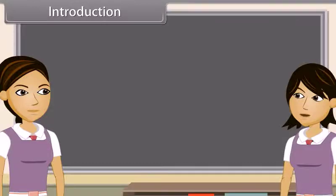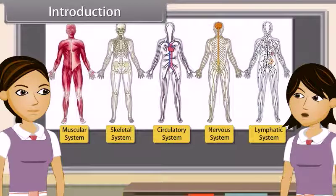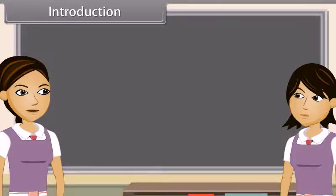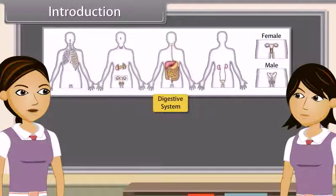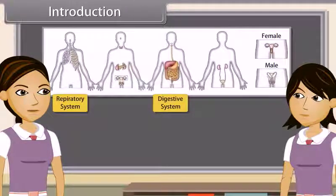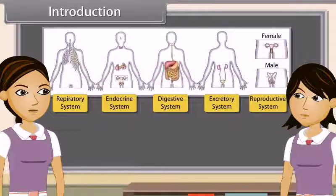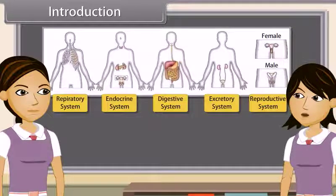As we already know, the body of higher animals like man is formed of a number of organ systems. Some examples are the digestive system, respiratory system, circulatory system, excretory system, etc. Each system is specialized to do a specific function, such as nutrition, digestion, respiration, transport of materials, and excretion, respectively.